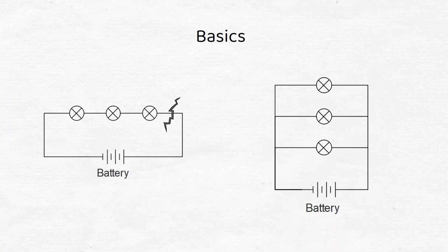In a parallel connection, all the positive wires are connected to each other and all the negative wires are connected to each other. The wires come together in a combiner box. If one of the wires from the light breaks, the other lights will still work.